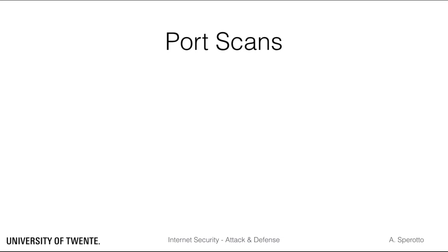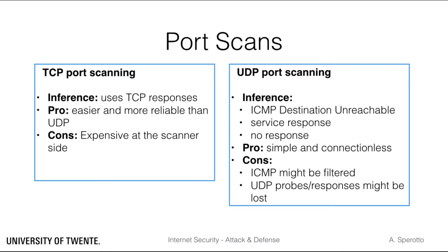A different type of information one might want to gather using a scan is which ports are open on a host. This information can be considered a good approximation of which services are active on a host. One can use both TCP or UDP for a port scan. There are pros and cons for choosing either of these protocols. TCP scan uses TCP responses, like SYN packets or RESET packets, for inferring if a port is open or closed. It is considered a quite reliable way of scanning because TCP is connection-oriented, but it might be expensive for the scanner to initiate a TCP connection with multiple destinations.